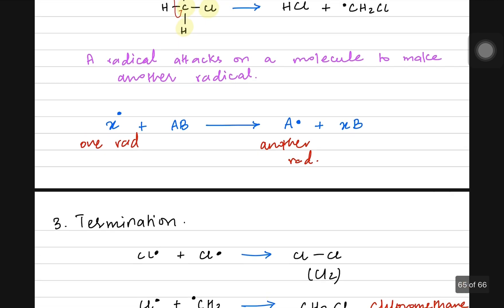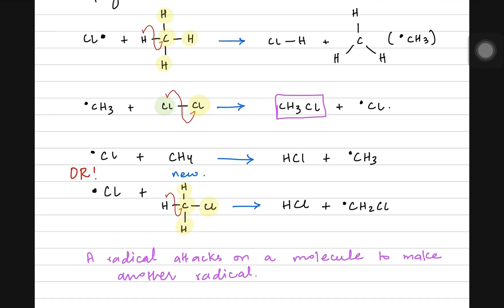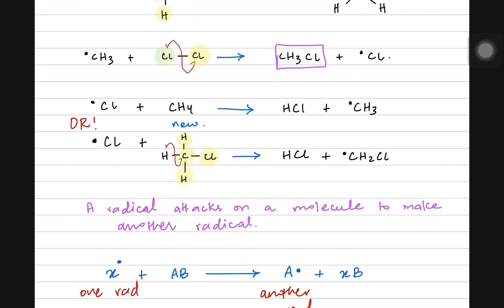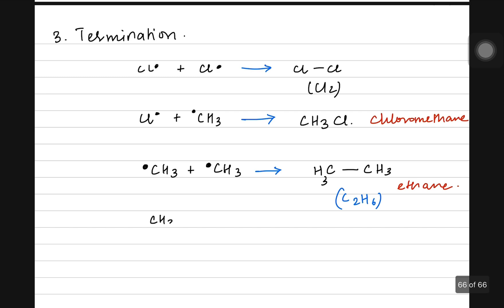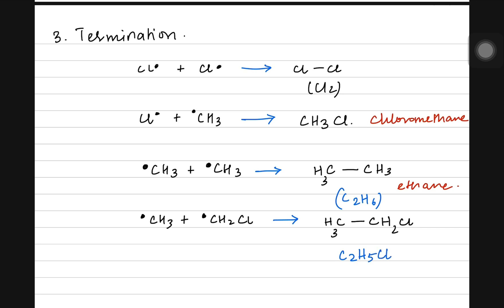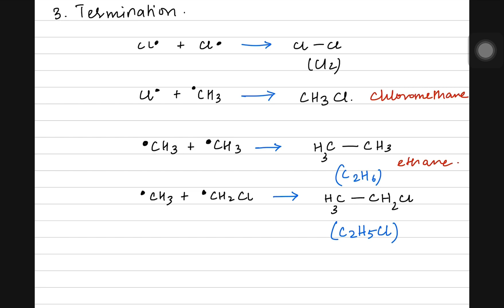We also had the chloromethyl radical (CH2Cl•). What if a methyl radical collides with a chloromethyl radical? When they combine, the carbons join — CH3 from the methyl radical and CH2Cl from the chloromethyl radical — giving C2H5Cl, which is chloroethane. So you can also get chloroethane starting from methane.